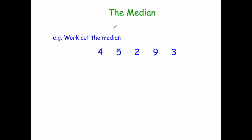In this video we're going to look at how to find the median for a list of numbers. The median is the middle number whenever all the numbers are arranged numerically.